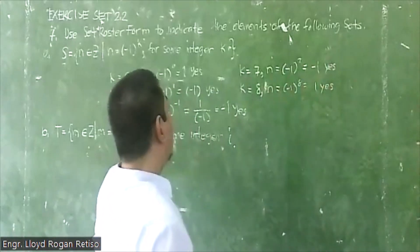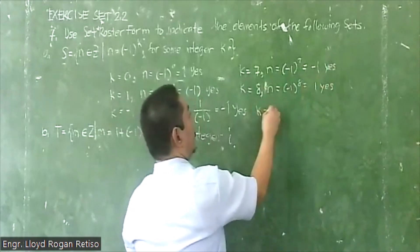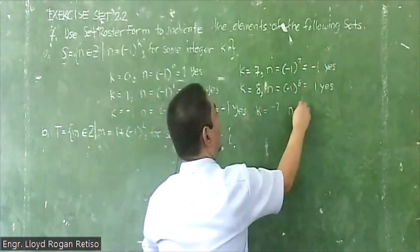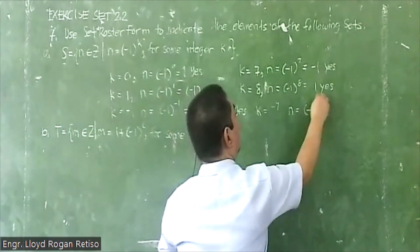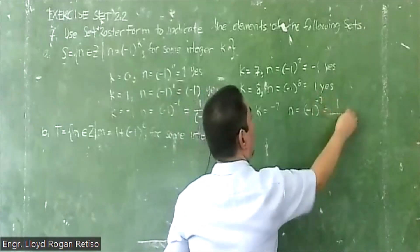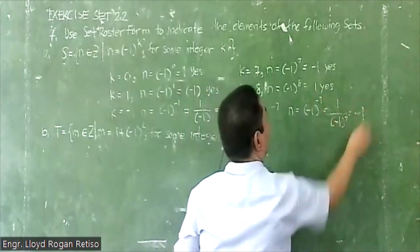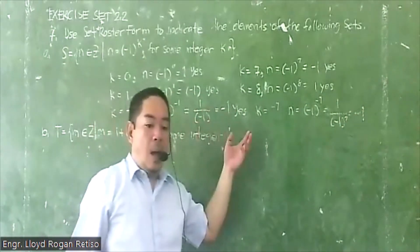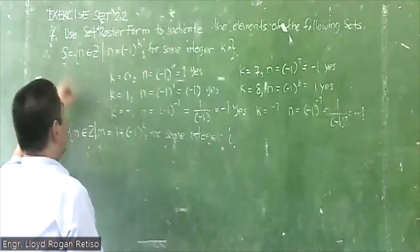If k equals negative 7, then n equals (-1)^(-7), which is negative 1. So meaning our elements are just 1 and negative 1.